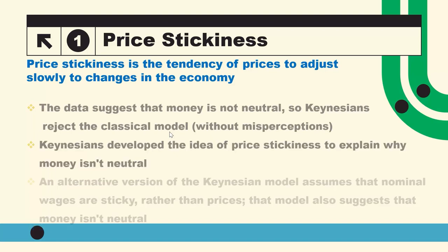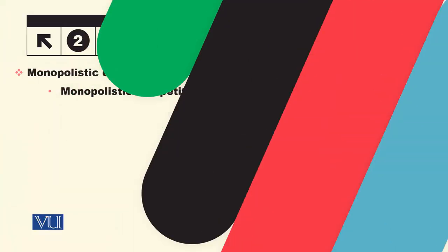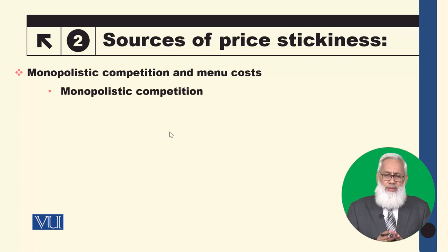In the Keynesian model, to justify that money is not neutral, they argue that prices are sticky — that is why money is not neutral. An alternative version of the Keynesian model assumes that nominal wages are sticky. We are talking about prices, but the alternative model concerns wages being sticky, and the implication is that money is not neutral.